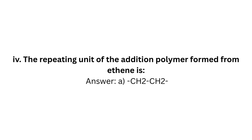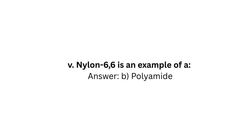Question 4: The repeating unit of the addition polymer formed from ethene is? Answer: A — CH₂CH₂. Question 5: Nylon 6,6 is an example of? Answer: B — Polyamide.